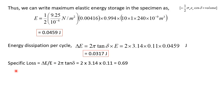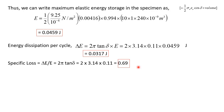The specific loss is given as the ratio of delta E over E, which equals 2 pi times tan delta. Calculating: 2 multiplied by 3.14 multiplied by 0.11 gives us a specific loss of 0.69.